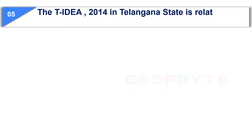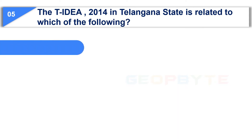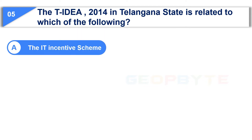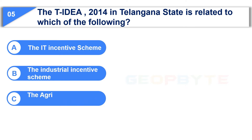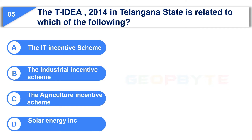The fifth question is: The TS-IDEA of 2014 in Telangana State is related to which of the following? Option A: the IT Incentive Scheme. Option B: the Industrial Incentive Scheme. Option C: the Agriculture Incentive Scheme. Option D: Solar Energy Incentive Scheme.